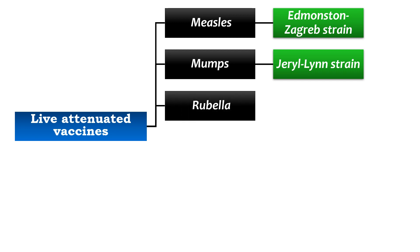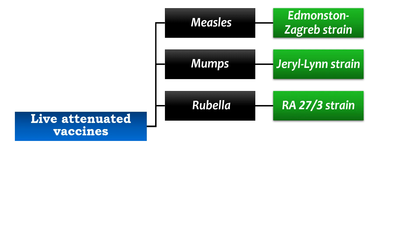For rubella, the strain used is RA27/3, prepared from human diploid fibroblast cell lines. This vaccine is contraindicated in pregnancy because it is teratogenic, and women should avoid pregnancy for at least four weeks following vaccination.